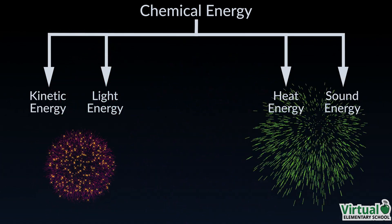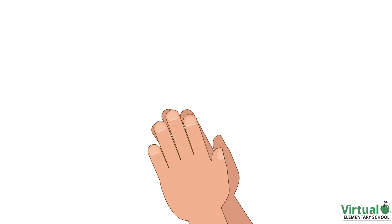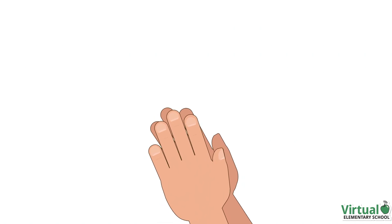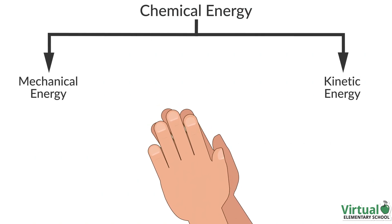When you rub your hands together, you transform chemical energy from the food you eat into mechanical and kinetic energy in your muscles. Then, that energy is transformed into heat energy.